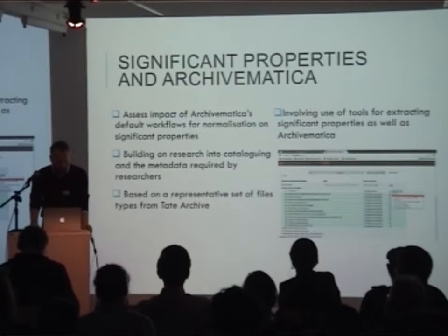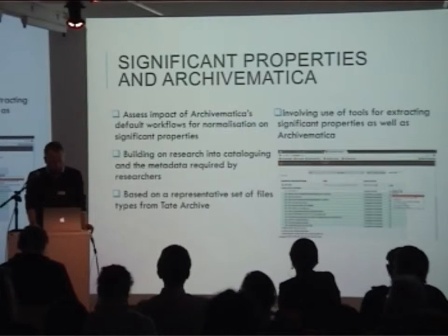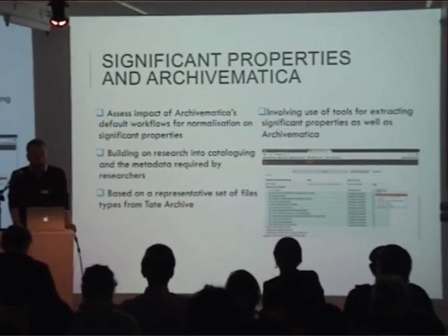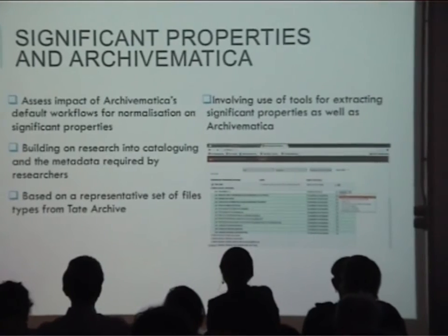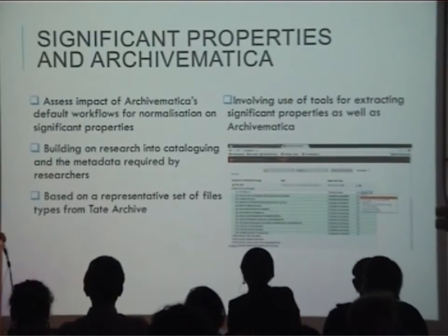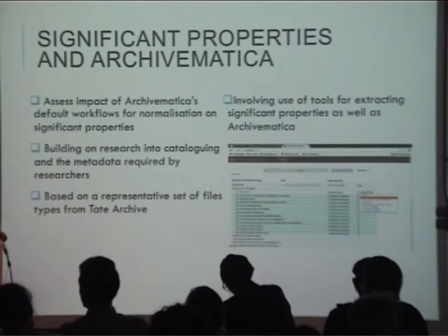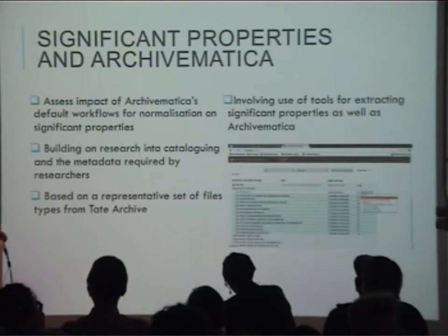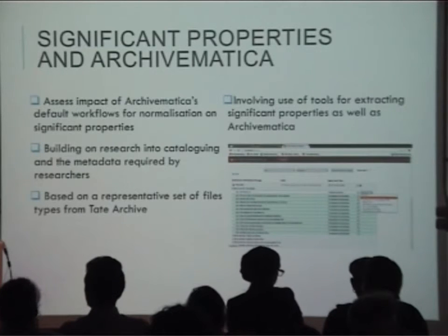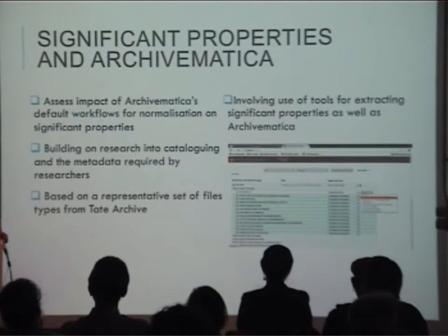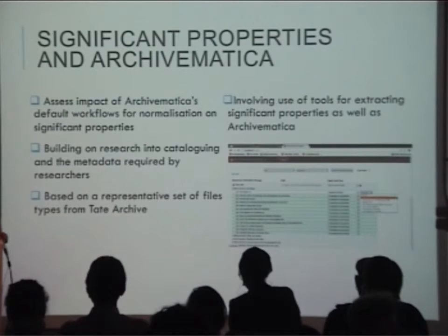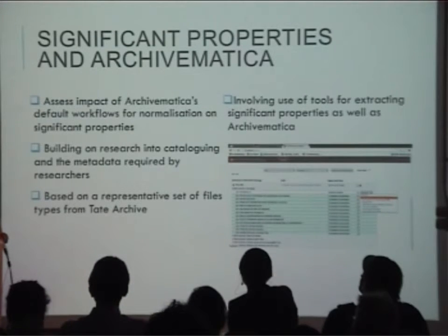Tate Archive is also conducting a practical examination of significant properties and of Archivematica in relation to cataloguing. This includes a project to assess the degree to which significant properties are altered by Archivematica's workflows for file format migration, and the implications for archive cataloguing. Archives will need to evaluate what information needs to be passed to researchers when producing access copies of digital material, taking into account the impact of any processing performed by the archive on significant properties. Archives will also need to consider how to capture this metadata, where to store and manage it, and how to present it to researchers.